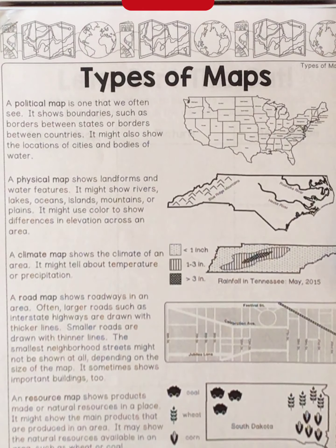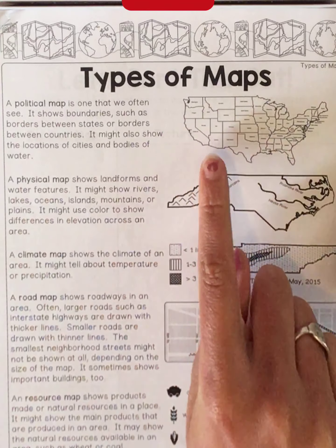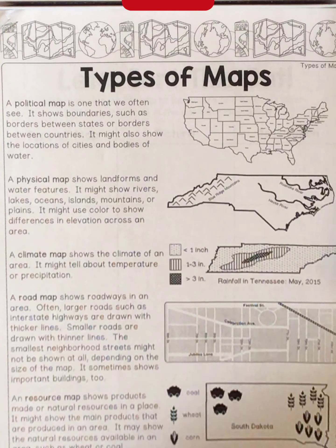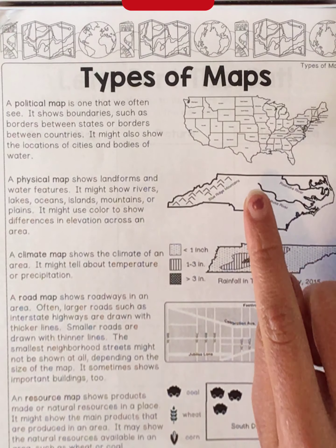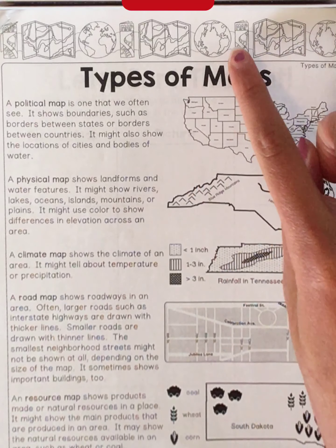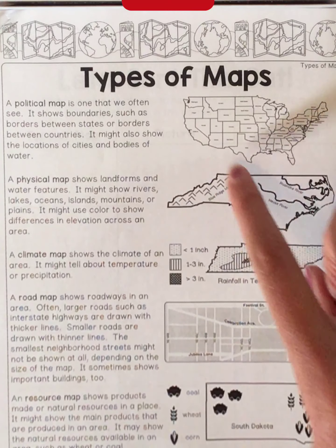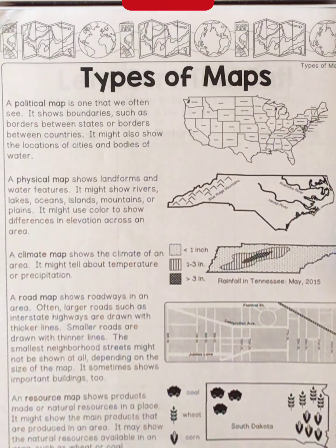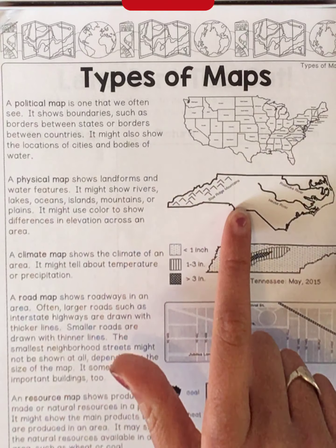The first type of map you see here is a political map. This is probably what you're most familiar with — it has boundaries that show borders between states and borders between countries, like the border up north between Canada and the United States, and down along Texas, the border between Mexico and the United States. A political map might also show you locations of cities, bodies of water, and rivers.